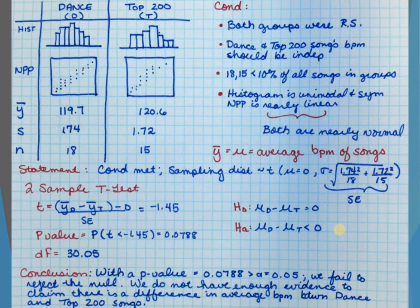For every hypothesis test you've got to show your T-score and your p-value. Make sure you wrote your statement comparing your probability to the test statistic, your alternative symbol, and your value. I did mine doing dance minus top 200 — so my t-star is negative and my alternative symbol is less than. If you did top 200 minus dance, then the sign would be flipped and that would be positive, but your p-value would be the same.